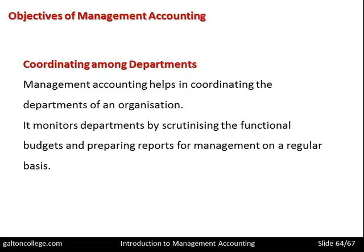Management accountants monitor departments by scrutinizing the functional budgets and preparing reports for management on a regular basis. Management is aware of what's happening within the various functional departments because management accountants are constantly scrutinizing those budgets. For example, a production finishing department will have a budget, and the management accountants will monitor it to make sure the budget holder is working within it, while also preparing reports to management about how well that department is working, what issues it is confronting, and what budget adjustments are required — leading to better management.